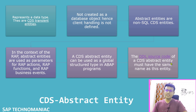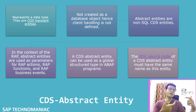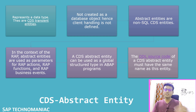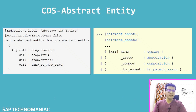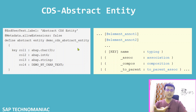The abstract entity must have the same name as your DDL source code. Just as when defining a regular CDS entity the DDL source code name and the entity name must match, similarly your CDS abstract entity and its DDL source name should be the same. To define a CDS abstract entity, use 'define abstract entity' instead of 'define view entity.'